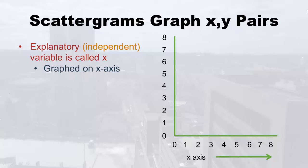So if you measure my height and my weight, that's an x, y pair. If you measure my height and then my friend's weight, that's not an x, y pair, because that's two different people. The x part is called the explanatory or independent variable.